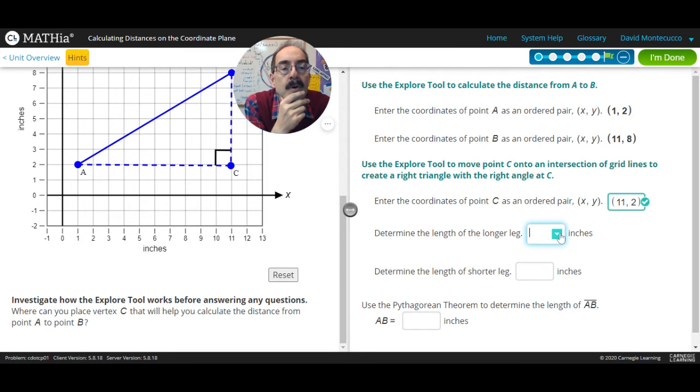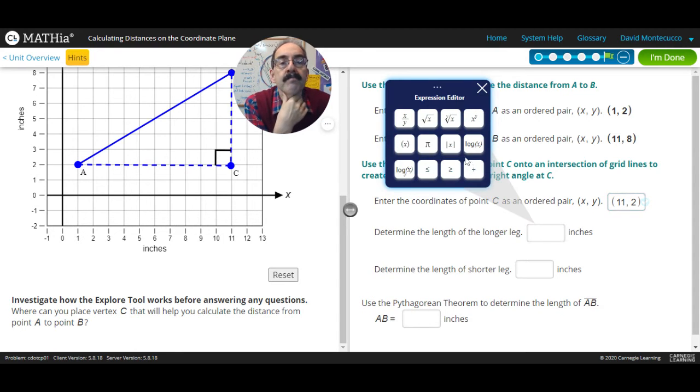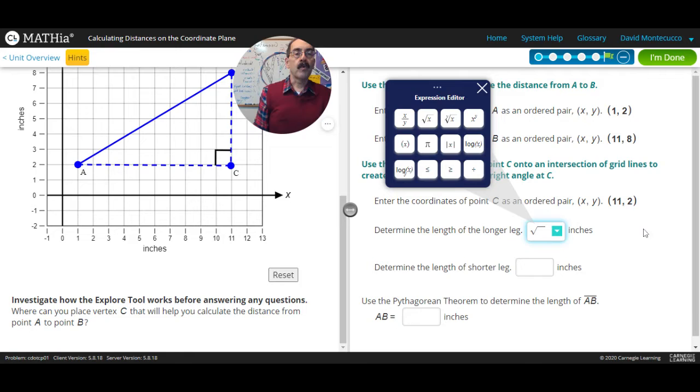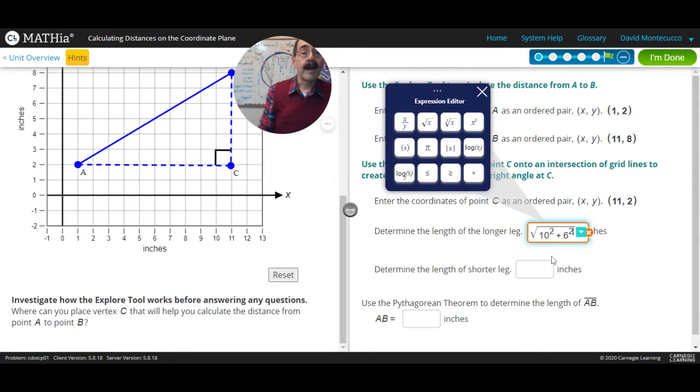Determine the length of the longer leg. Now, in order to do this math, we could actually go in and put the equation in. So we count the number of units on the X from 1 to 11. So we're going to go 10 squared, big arrow. And then we're going to go plus. So that's the run. Now the rise from 2 to 8, 6, shift, squared, enter. We can do the math right in there.